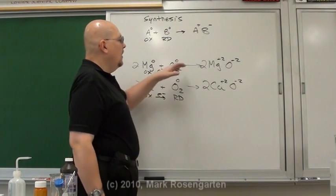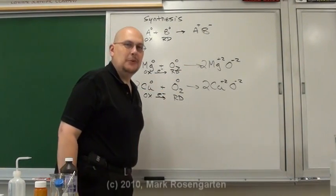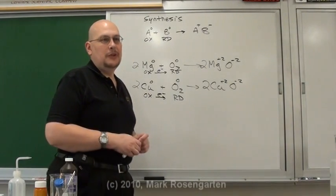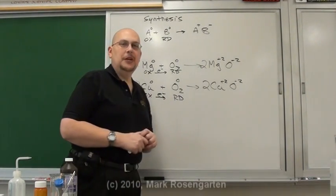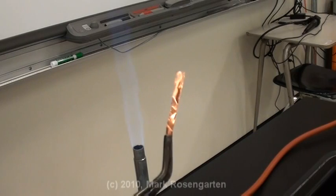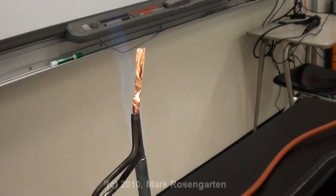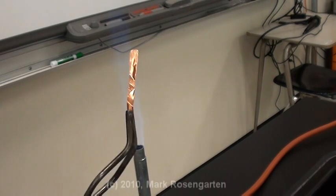Now as you're about to see, these two reactions do not proceed with the same amount of vigor. Each of them gives off a certain amount of energy when they react, and you'll be able to tell pretty clearly which one gives off more energy than the other. First we're going to react the copper with the oxygen by heating it up in a Bunsen burner flame.